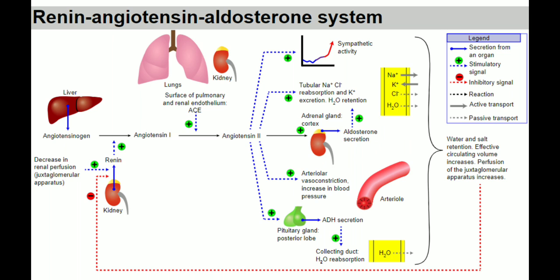Another function of angiotensin 2 is increasing sympathetic activity — that is the involuntary fight-or-flight response occurring in dangerous or stressful conditions. Additionally, ADH (antidiuretic hormone) helps in water reabsorption in the collecting duct, so water content is maintained.